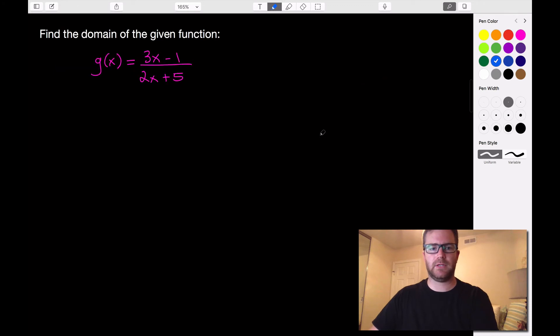So let's look at another example. For example, we have a rational function here. So we have g(x) equals 3x minus 1 over 2x plus 5.